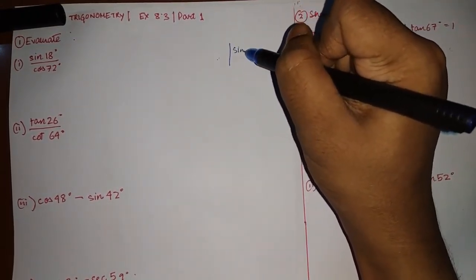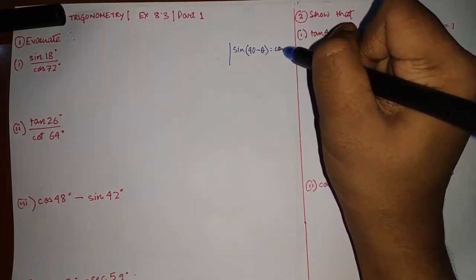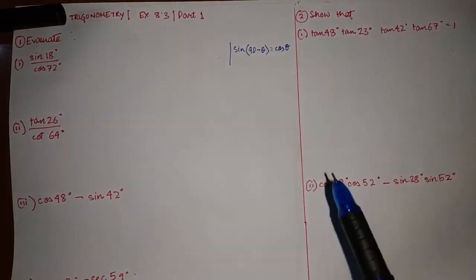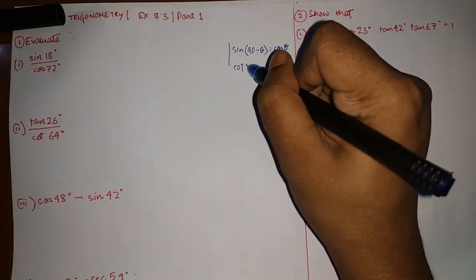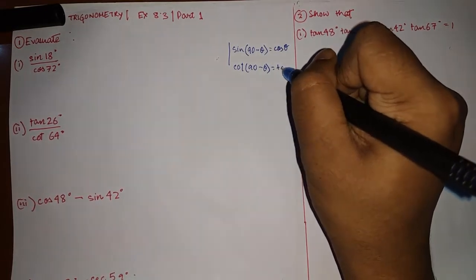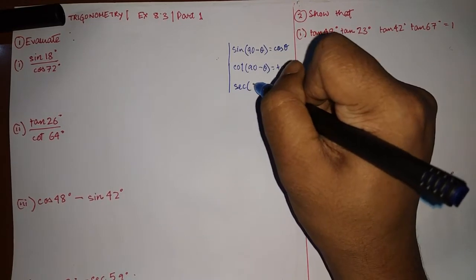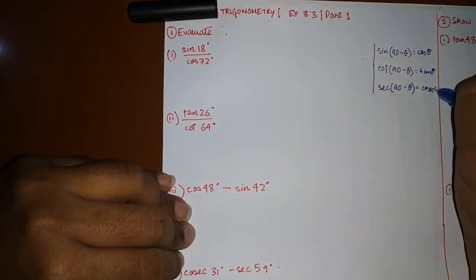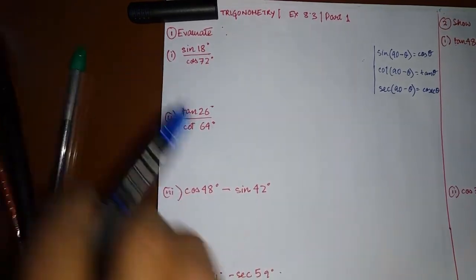The first formula is: sin(90° − θ) = cos θ. You can convert sine to cosine by this formula and vice versa. The second formula is: cot(90° − θ) = tan θ. The third one is: sec(90° − θ) = cosec θ, and vice versa. You have to apply these formulas to solve each and every question of this exercise.